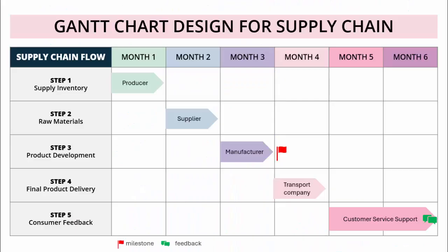In today's tutorial I'm going to show you how to create a Gantt chart for supply chain. This is how the Gantt chart looks — I have created it for six months. On the left side I have put Step 1, which is supply inventory, raw materials, product development, final product delivery, and it ends with consumer feedback. On the right side I have put the timeline.